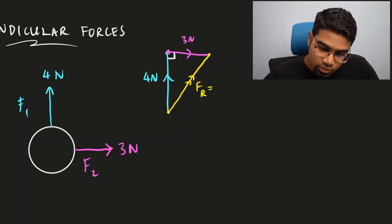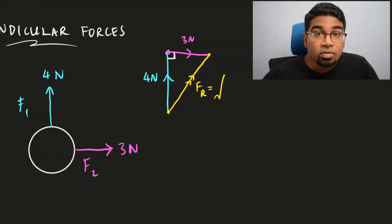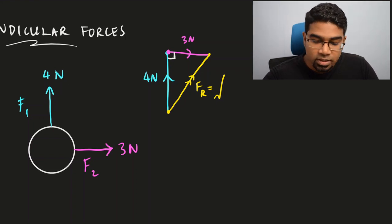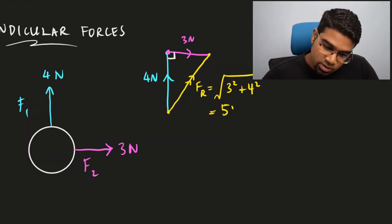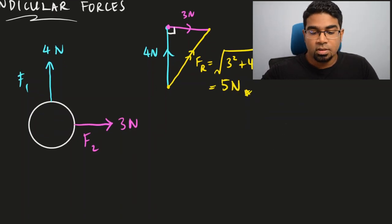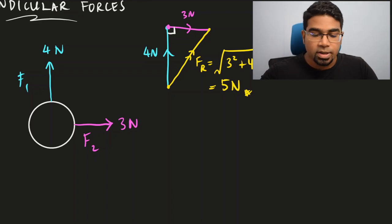To get the value of the hypotenuse we do the square root of the sum of the other two sides squared. So we get square root of 3 squared plus 4 squared. The magnitude is 5 newtons. This is how we get the resultant force when the forces are perpendicular to one another.